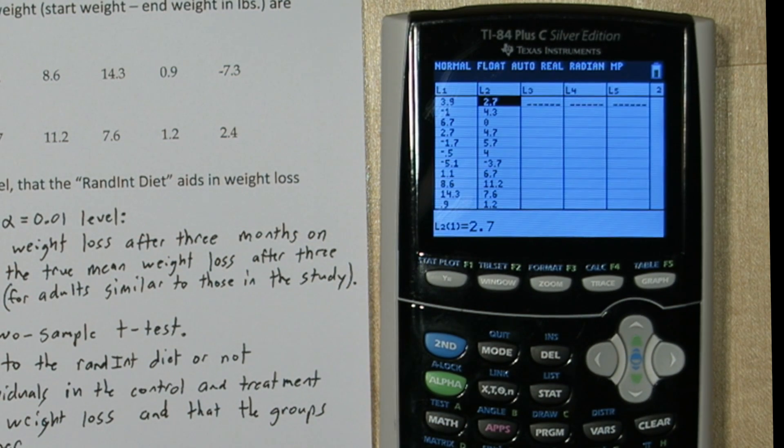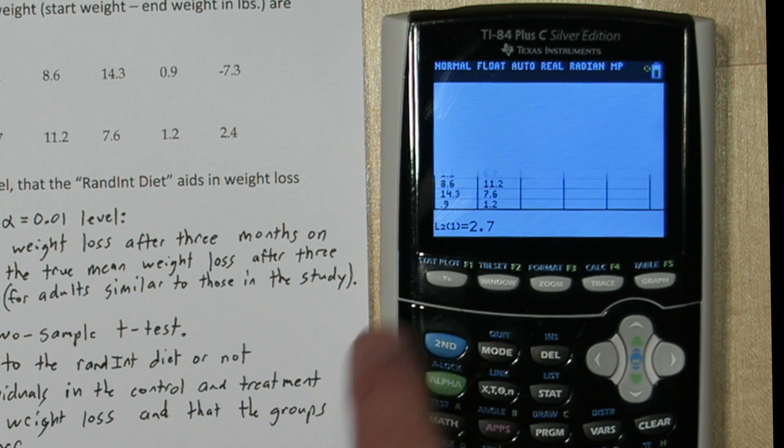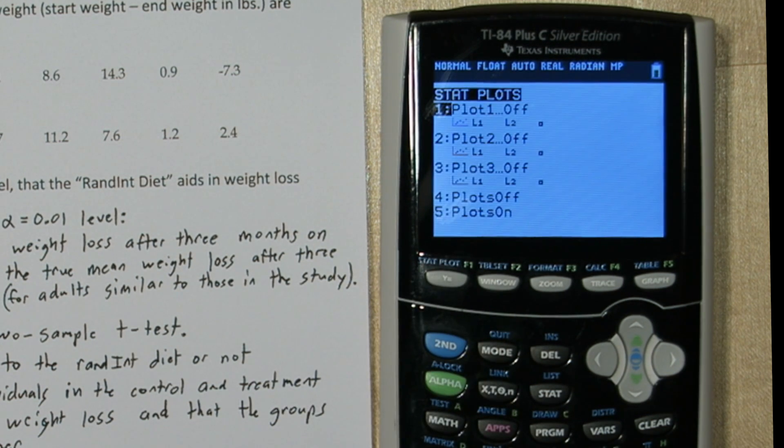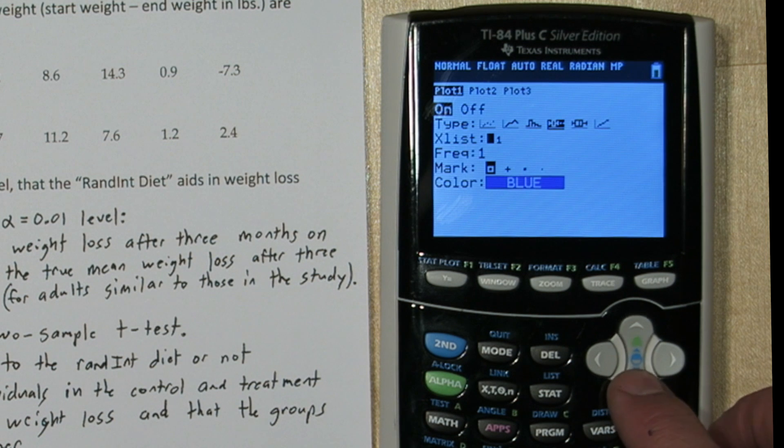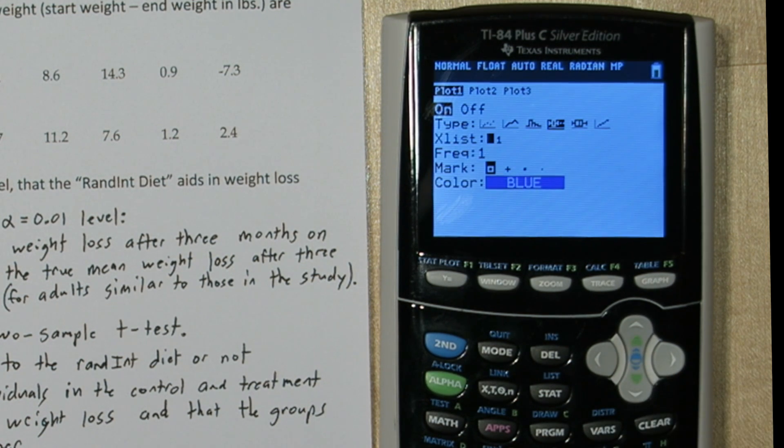Alright, let's start by checking outliers by looking at modified box plots of the data. If you press 2nd and y equals, this is our STAT plot menu. And we're going to press ENTER on plot 1 and turn it on, and choose modified box plot. And we'll leave everything else as it is.